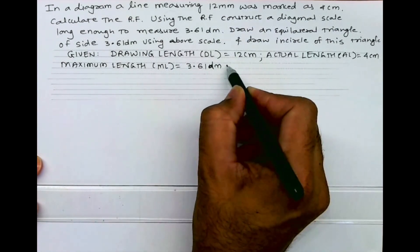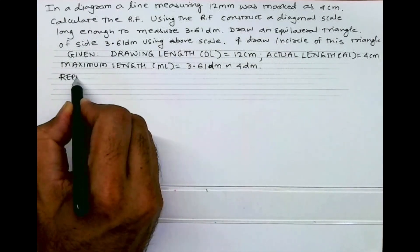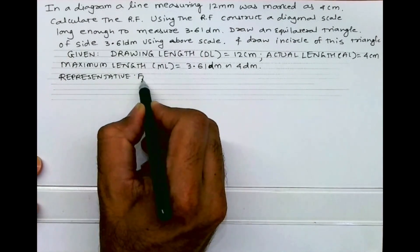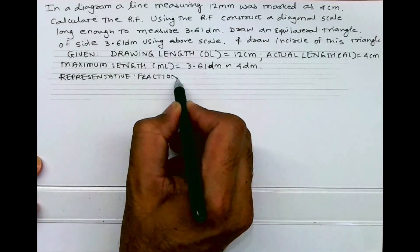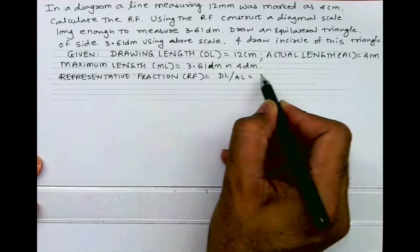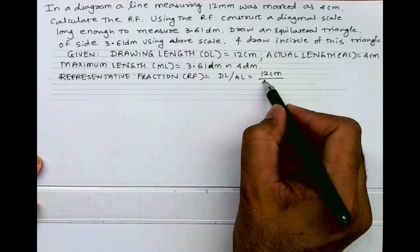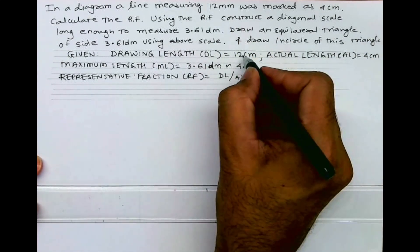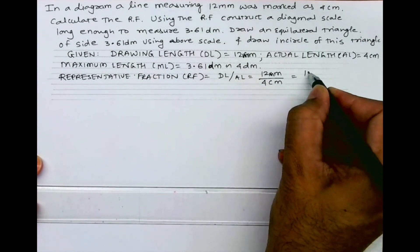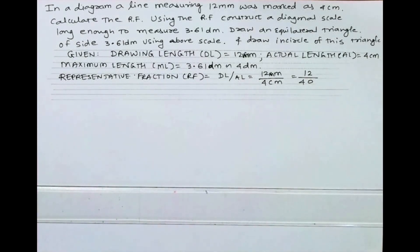Now we'll see representative fraction. RF is equal to drawing length upon actual length, so 12 millimeter upon 4 centimeter equals 12 upon 40. This is your RF.